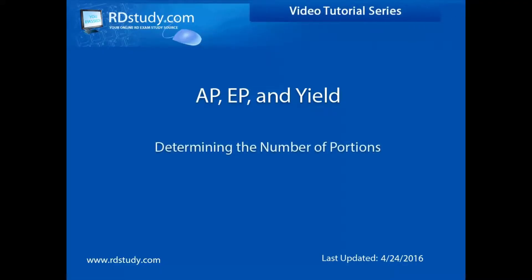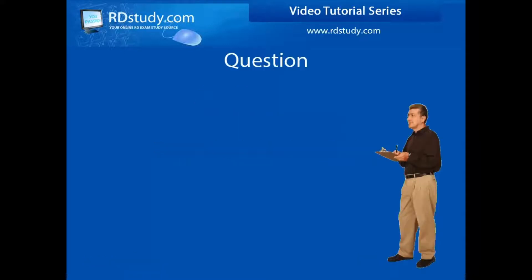Now that we know a little bit more about AP, EP, and yield, let's go through another example to help reinforce these terms. This example takes a look at the terms from a different angle in order to help you solve for the number of portions given the AP product amount, the yield, and the serving size.